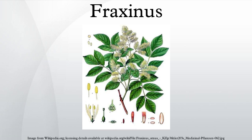Western and southwestern North American species include: Fraxinus anomala — single leaf ash; Fraxinus berlandieriana — Mexican ash; Fraxinus cuspidata — fragrant ash; Fraxinus dipetala — California ash or two-petal ash; Fraxinus gooddingii — Goodding's ash; Fraxinus greggii — Gregg's ash; Fraxinus latifolia — Oregon ash; Fraxinus lowellii — Lowell ash; Fraxinus papillosa — Chihuahua ash; Fraxinus texensis — Texas ash; Fraxinus uhdeii — Shamel ash or tropical ash; Fraxinus velutina — velvet ash or Arizona ash.